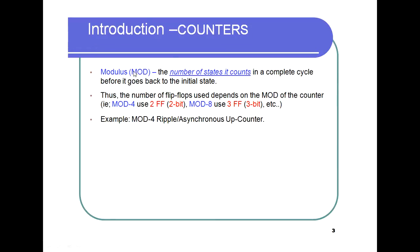We have mod, or modulus, counters. The mod is the number of states a counter goes through before it recycles back to its initial state. The number of flip-flops used depends on the mod of the counter. For mod 4, you use two flip-flops because 2^2 = 4; for mod 8, you use three flip-flops because 2^3 = 8.